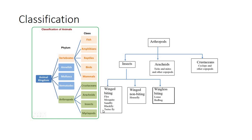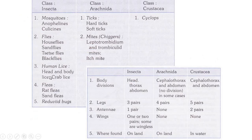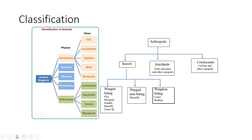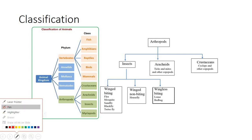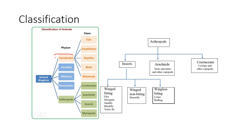We all know there are two kingdoms — animal and plant kingdom. We belong to the vertebrates, specifically the mammal class. In the phylum classification, there are arthropods. Entomology is the study of arthropods and insects, which are further classified into class Crustacea, Arachnida, and Insecta.